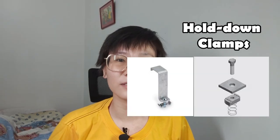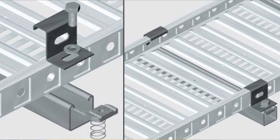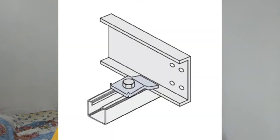The next accessory is the hold-down clamp. Hold-down clamps ensure the cable containment is secure and tightly locked to the struts. After the cable containment is placed on top of the struts and correctly aligned, hold-down clamps are used to lock it in position so that it doesn't move due to vibration or external force.